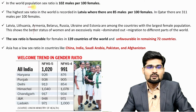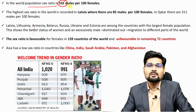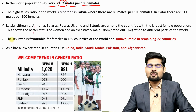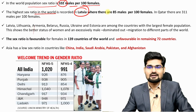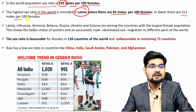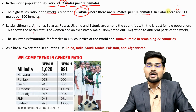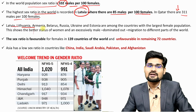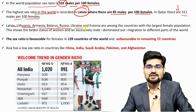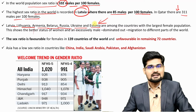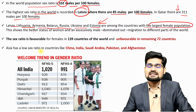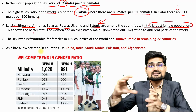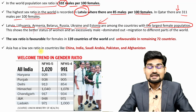The world average is 102 males per 100 females. The highest female-favorable sex ratio is in Latvia at 85 males per 100 females, while Qatar has 311 males per 100 females. Countries like Latvia, Lithuania, Armenia, Belarus, Russia, Ukraine and Estonia are among those with the largest female populations. Sex ratio is favorable for females in 139 countries of the world and unfavorable in about 72 countries — that is the general global trend.